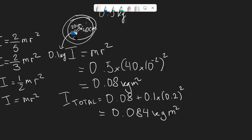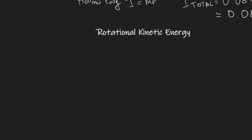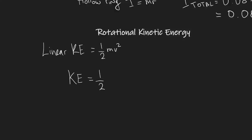In some questions we may be given two wheels or different shapes attached together, and we'd use those formulas. Now let's revise rotational kinetic energy. Linear kinetic energy is one-half mv². Since the moment of inertia plays the same role as mass in linear mechanics, rotational kinetic energy is one-half I times angular speed squared.